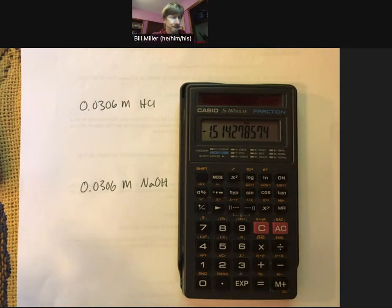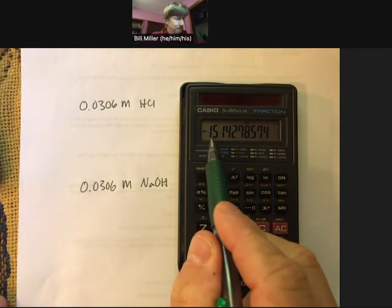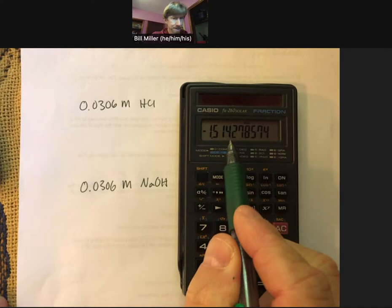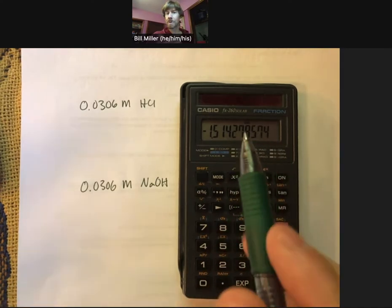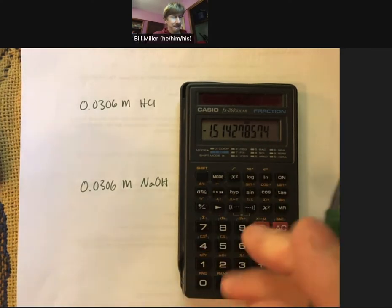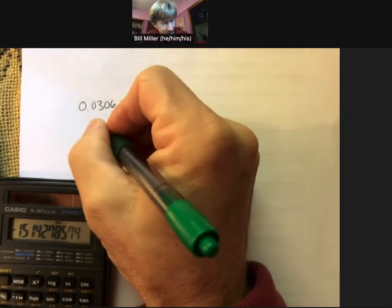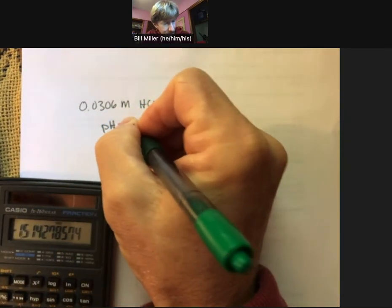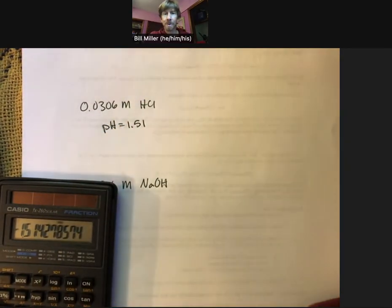And the answer you get is minus 1.51. Then you take the negative of that, and you end up with pH equals 1.51.